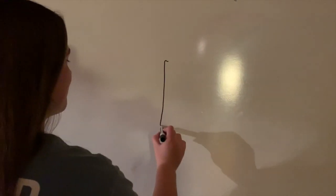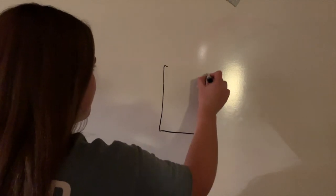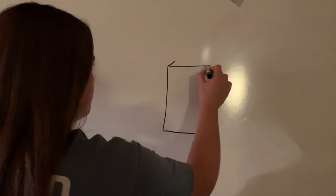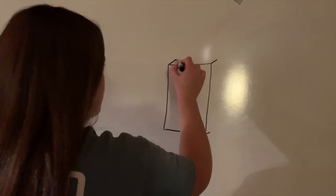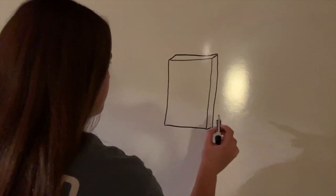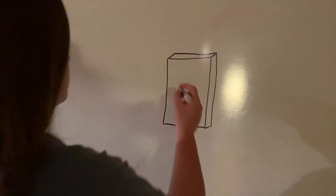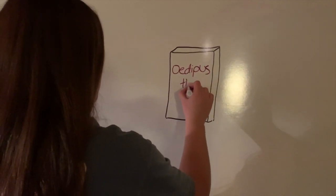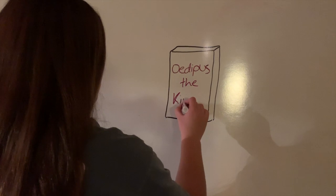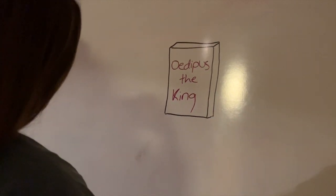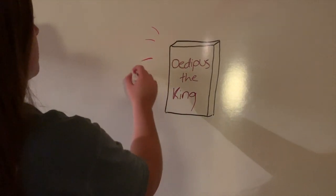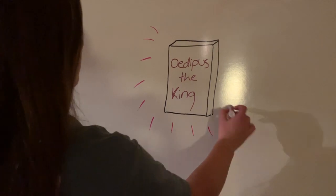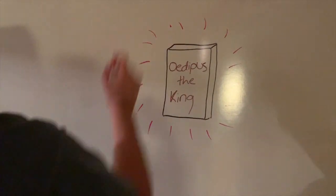Oedipus the King is a tragedy by the ancient Greek playwright Sophocles, first performed in about 429 BCE. It follows the story of King Oedipus of Thebes as he discovers that he unwittingly killed his own father, Laius, and married his own mother, Jocasta. Over the centuries, it has come to be regarded by many as the Greek tragedy par excellence, and certainly as a summit of Sophocles' achievements.